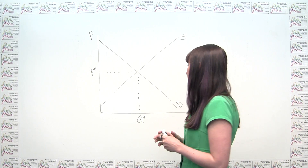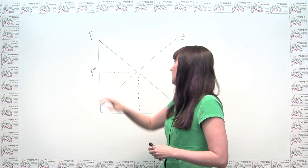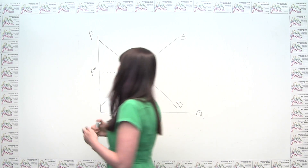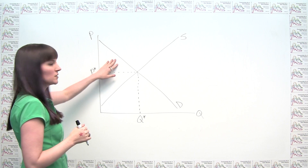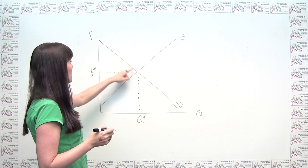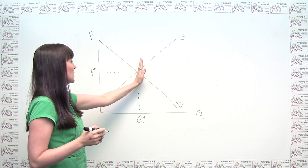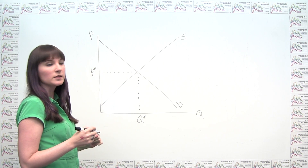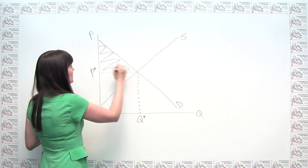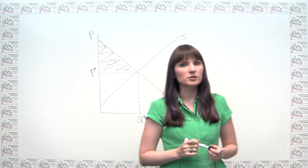Now, the student is not correct, because what the student said is inconsistent with the definition of consumer surplus we gave before, where consumer surplus is just the area below the demand curve, above the price that the consumer pays, and to the left of the equilibrium quantity, or the quantity transacted. So we know graphically that our consumer surplus is represented by this triangle here, which is clearly not zero.